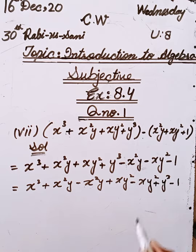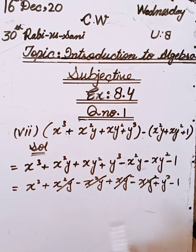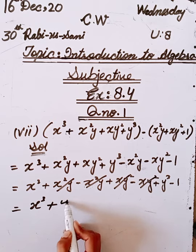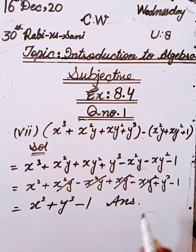Students, the plus and minus we will cut, both values will cancel. So we have the answer: x³ + y³. The remaining parts use the same method. Now we will start question number two.